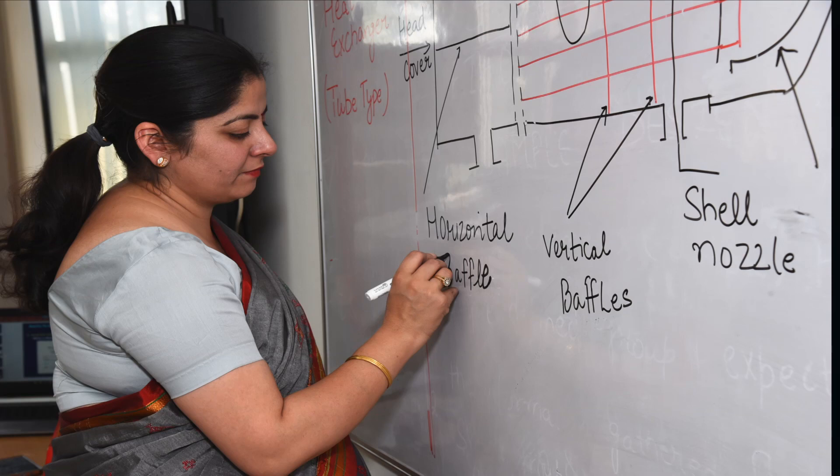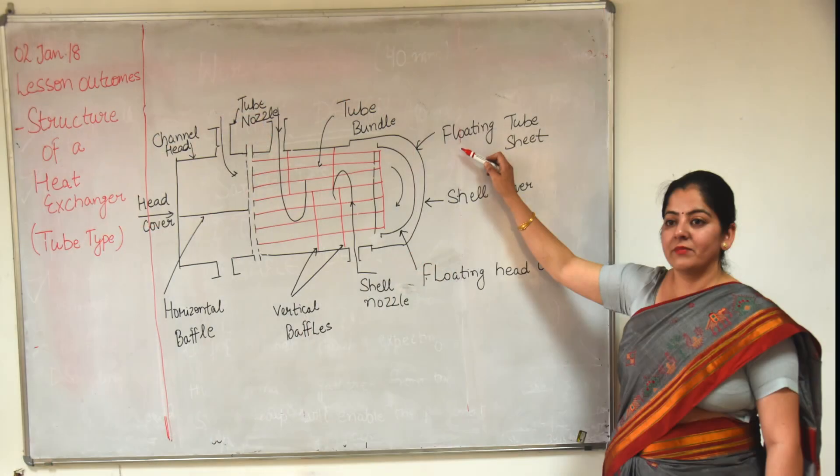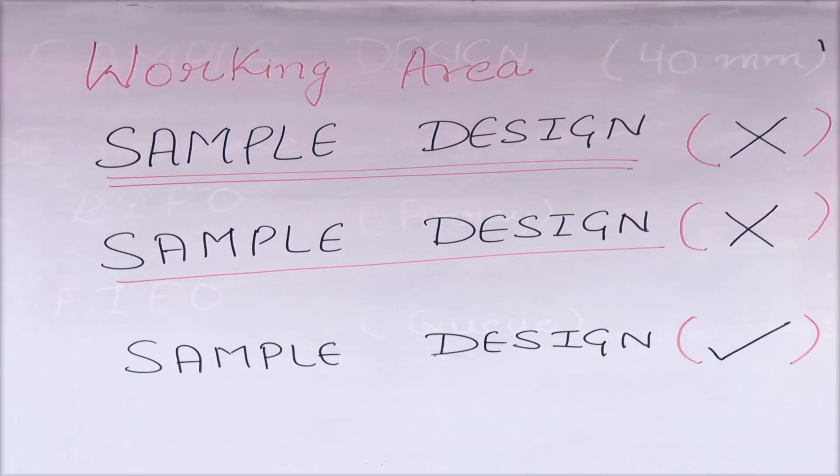Whenever the teacher is using the board, do not turn your back to the students. Once your writing is over, stand on one side and try to explain the content to the class. Never underline or double line the headings on the board.